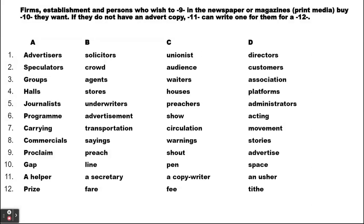Firms, establishments and persons who wish to [9] in the newspaper or magazine — that is print media — buy [10] they want. Number nine: proclaim, preach, shout or advertise — who wish to advertise in newspaper. Number ten: gap, line, pay or space — you buy space in a newspaper or magazine. On radio and television, you buy time, which we can call slots.